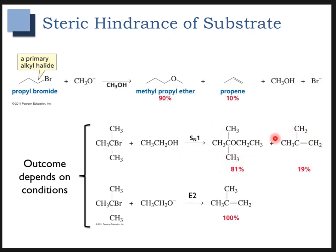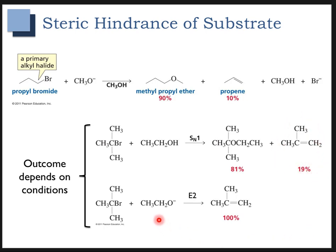We're seeing a little bit of E1 because we have a weak base and a polar protic solvent. In this case, the leaving group is going to fall off, we're going to get a carbocation intermediate, and we're going to get primarily substitution, but also some elimination E1. If you have a strong base and a tertiary alkyl bromide, you're going to see almost exclusively elimination via the E2 mechanism.